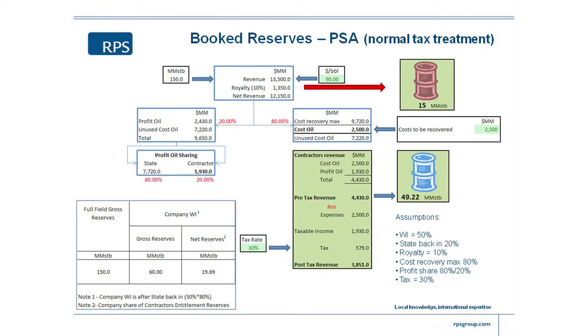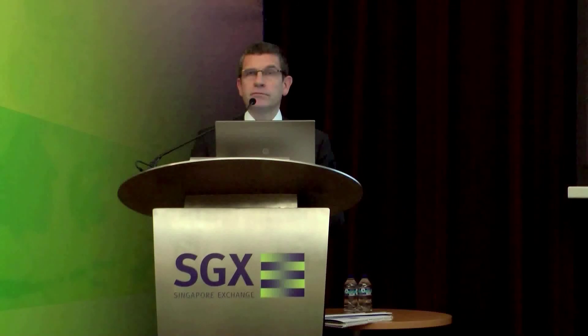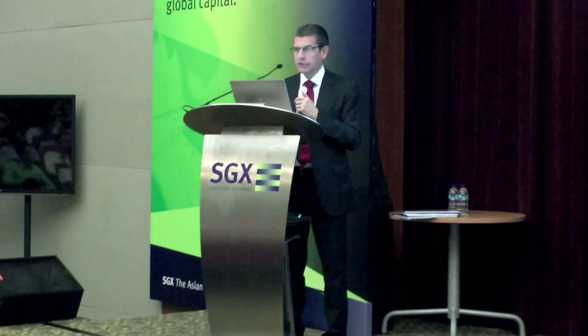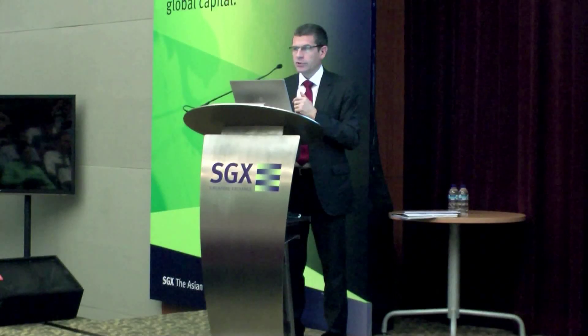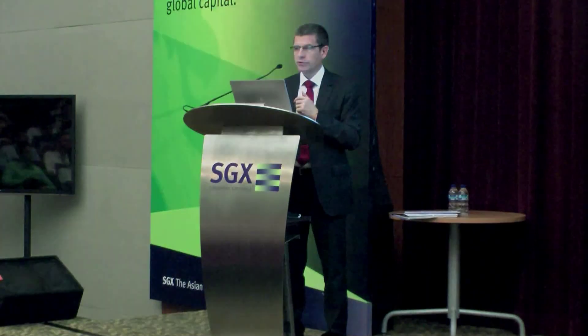In the UK, there's no royalty at all anymore — there used to be 20 or 30 years ago. So in the UK, reporting fields, I wouldn't need two columns because gross and net is exactly the same. So that's the simple case. Now let's have a look at a production sharing arrangement.